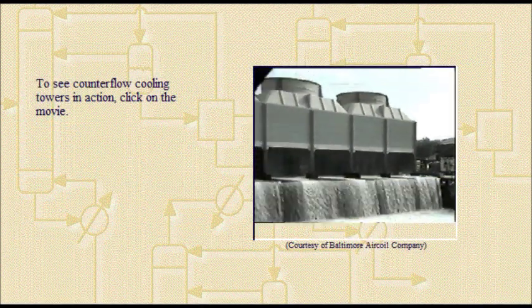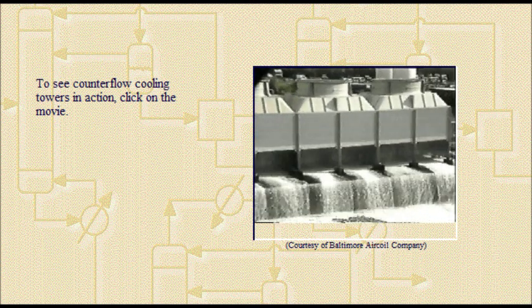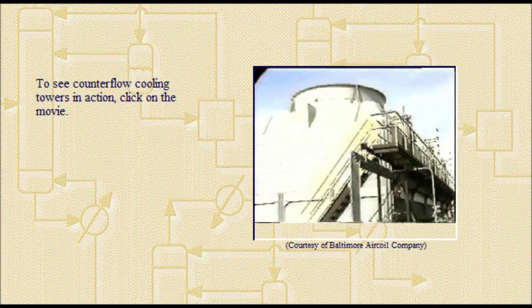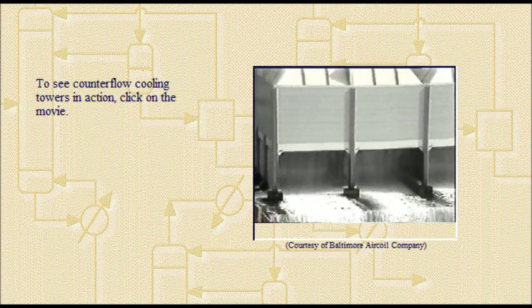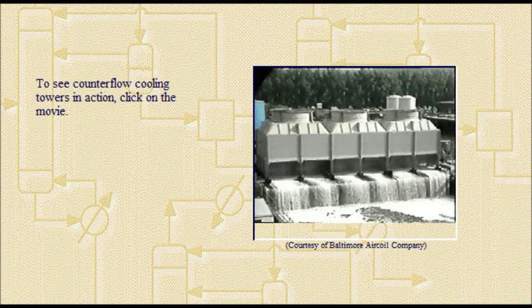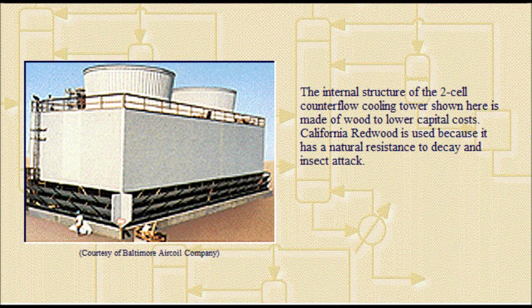Here you can see the cooling tower in action. The internal structure of a 2-cell counter-flow cooling tower shown here is made of wood to lower capital costs. California redwood is used because it has a natural resistance to decay and insect attack.